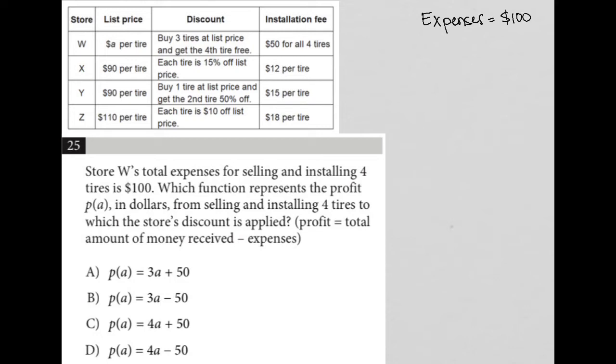The next sentence says which function represents the profit P of A. Profit is P of A, in dollars from selling and installing four tires to which the store's discount is applied. It looks like they're going to tell us how to find the answer here. It says profit is equal to, so P of A is equal to total amount of money received, or money in, minus expenses.